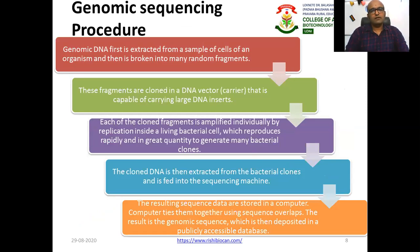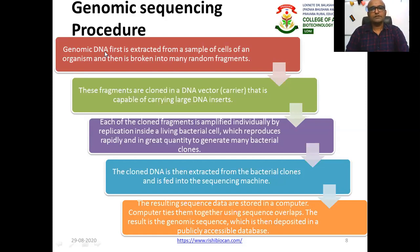For sequencing, there is a standard procedure. First, genomic DNA is extracted from a cell sample of an organism. It is then broken into random fragments, which are cloned into a DNA vector — a carrier capable of carrying large inserted fragments, such as a BAC, which stands for Bacterial Artificial Chromosome.